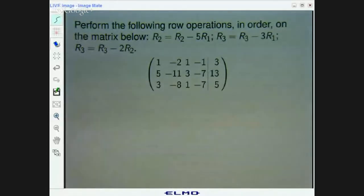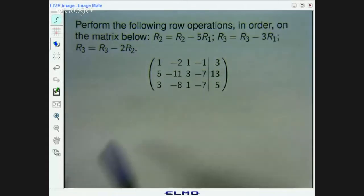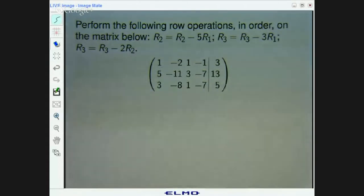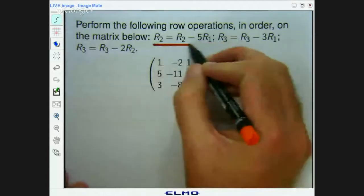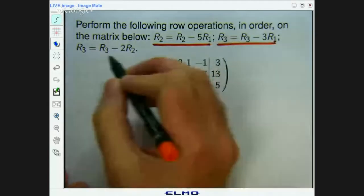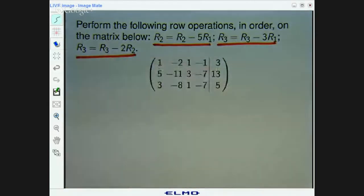Okay. Here's an example. Perform the following row operations in order on this matrix. And you've got 3 operations. 1, 2, 3. Okay? So let's work our way through that and see how it all works.